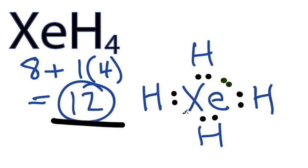Let's put 2 right here, and then 2 right here. So now we've used all 12 of the valence electrons. The hydrogens are okay with 2 each, and the xenon is okay with 12. So that's the Lewis structure for XeH4.